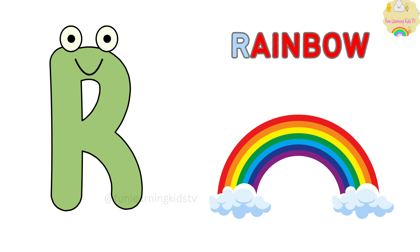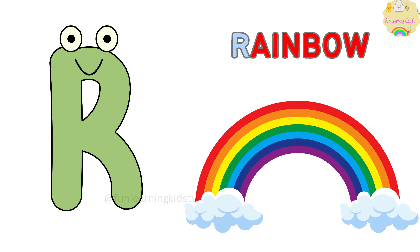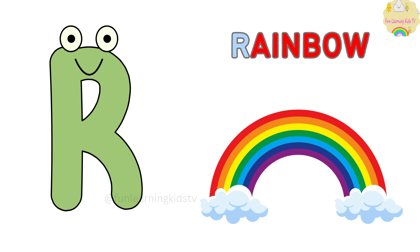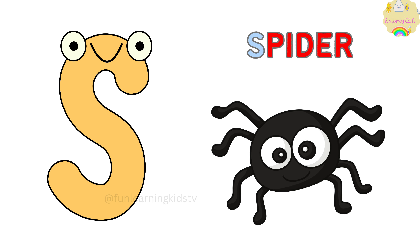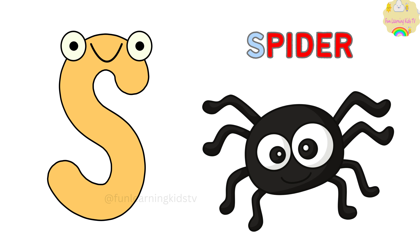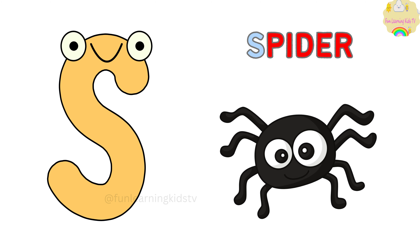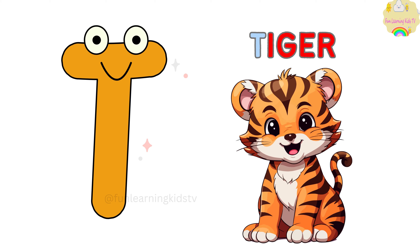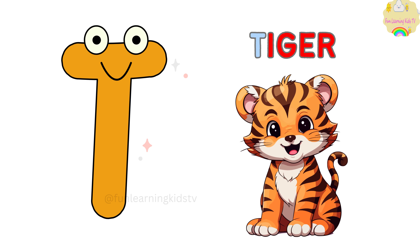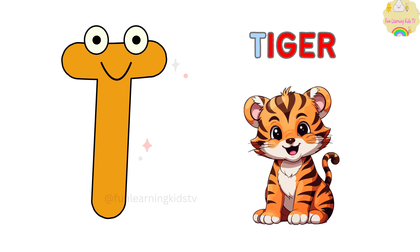R is for Rainbow. R-R-Rainbow, R-R-Rainbow, R-Rainbow. S is for Spider. S-S-Spider, S-S-Spider, S-Spider. T is for Tiger. T-T-Tiger, T-T-Tiger, T-Tiger.